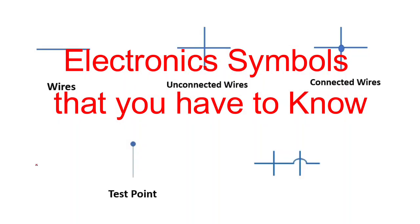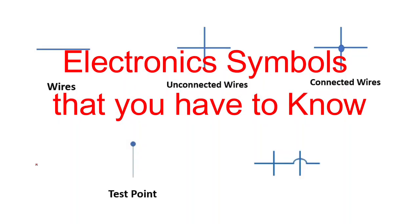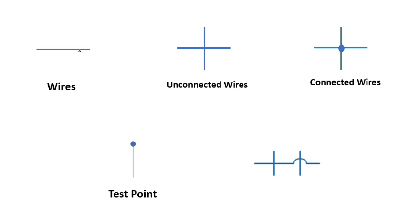In this slide we're going to see some wires. The first wire is a normal wire. Here we have unconnected wires — when you find two wires like this, it means unconnected wires.